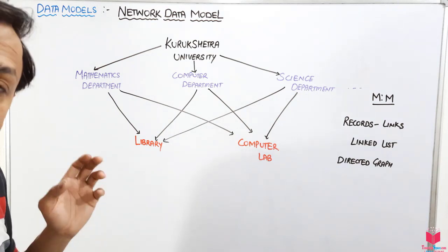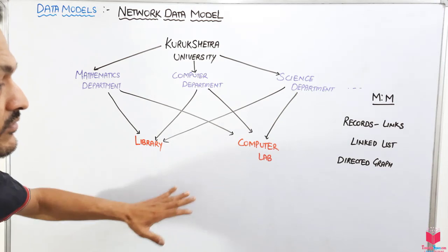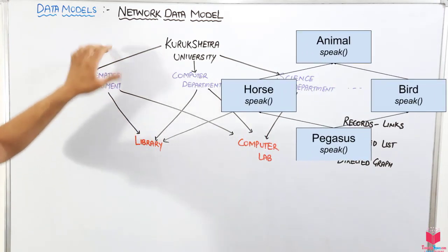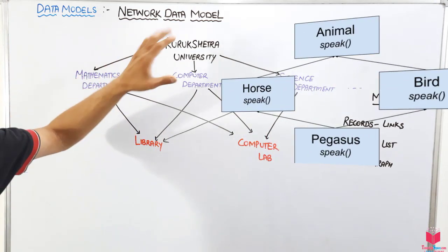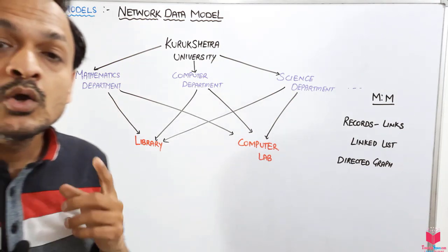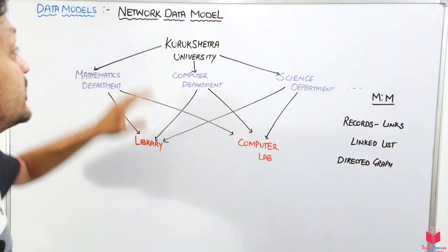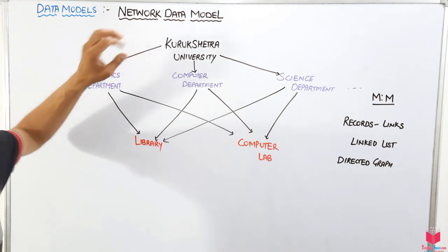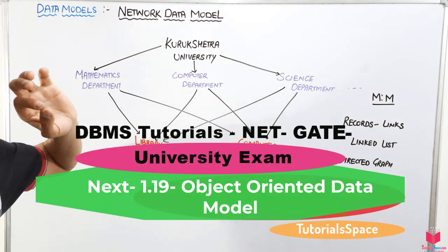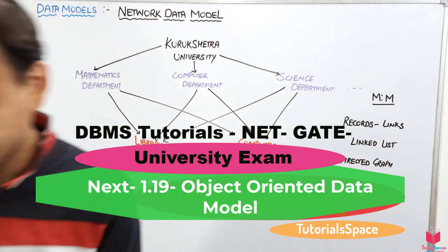This model is basically represented by a directed graph, which we will study in discrete mathematics. In the next video, we will study the object-oriented data model, and then discuss the differences between the hierarchical and the network model. Thank you and take care.